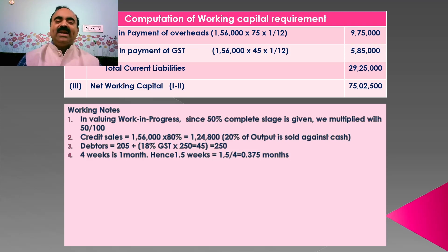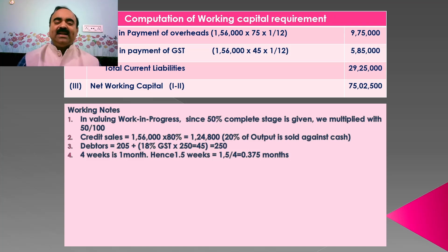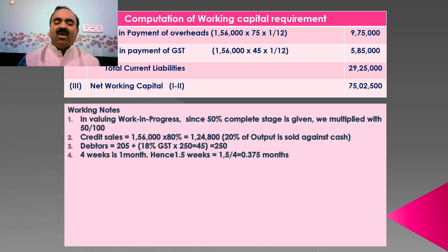Working notes for the case study. One: in valuing work in progress, since 50% completion stage is given, we multiplied with 50/100. Two: credit sales equals 1,56,000 multiplied by 80%, that is equal to 1,24,800, as 20% of output is sold against cash. Three: debtors is calculated using Rs. 205 plus 18% GST of Rs. 45, giving selling price of Rs. 250. Four: 4 weeks equals 1 month, hence 1.5 weeks equals 1.5/4, that is equal to 0.375 months.